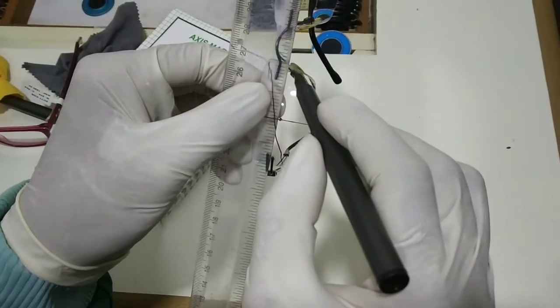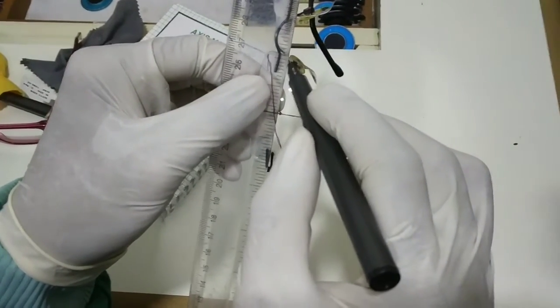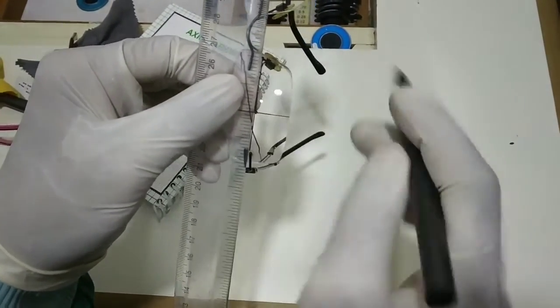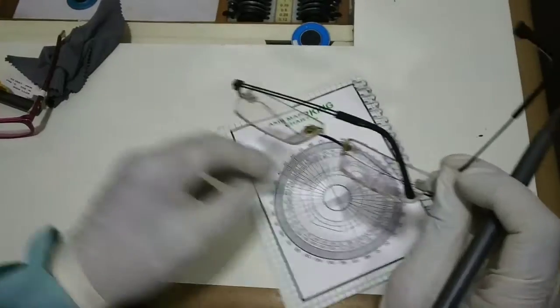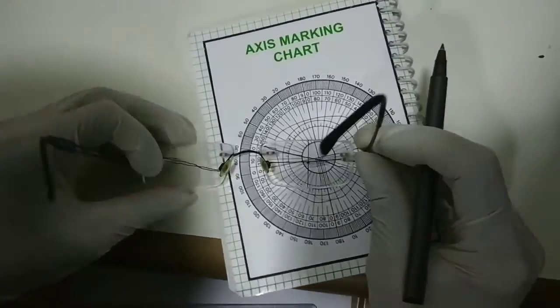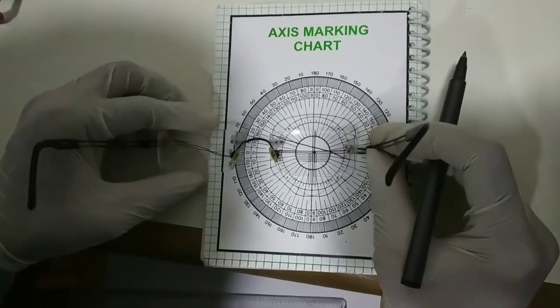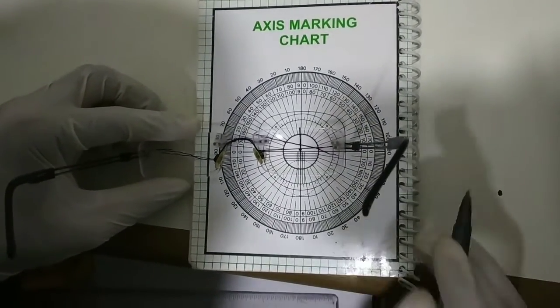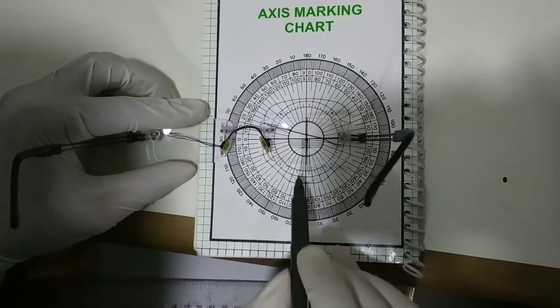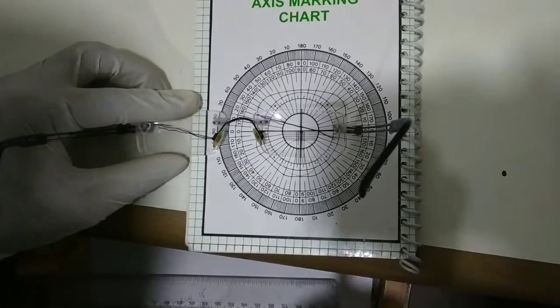We have to align it properly and make vertical and horizontal lines. The centration is the dot center which you can see. Now we have to use the axis marking chart with the vertical and horizontal lines inside, which I have aligned properly.